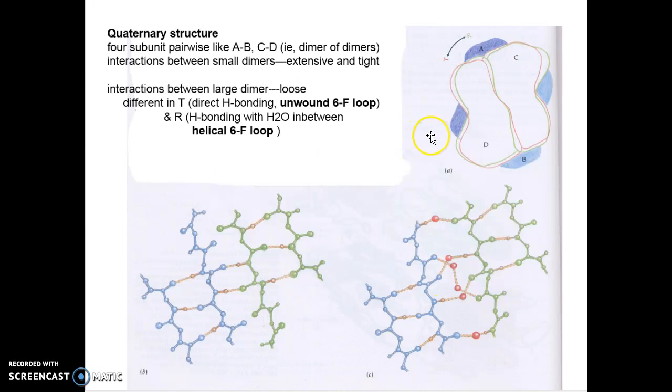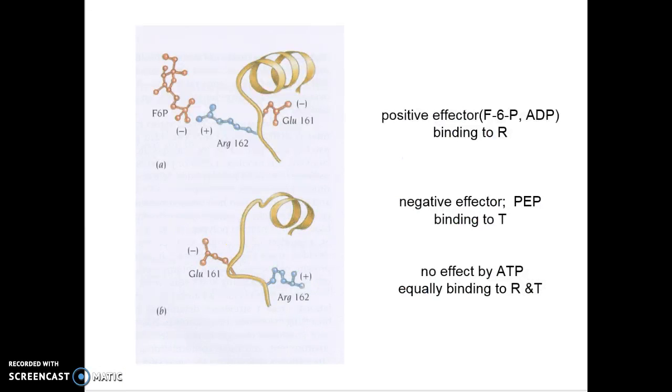This protein is a tetramer existing in two forms: T inactive and R active forms. They differ in interactions between polypeptides, tight and loose. Active site of R form favors binding of F6P due to the positively charged arginine, whereas that of T-form does not because of negatively charged glutamate. Positive effector binds to R-form while negative effector binds to T-form. ATP equally binds to R and T.